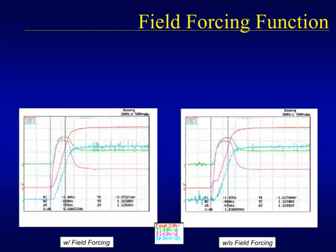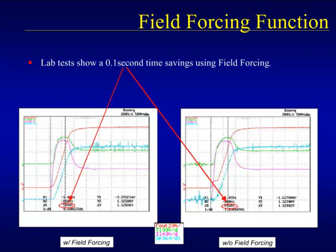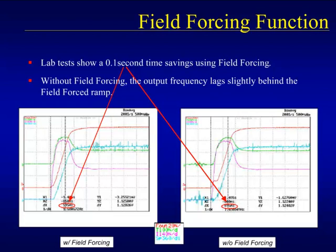These scope trace captures are from a test stand that was accelerated with and without field forcing. The motor in question was a 15 horsepower motor, and field forcing showed a 100 millisecond improvement in acceleration. The non-field force trace lags behind the field force one due to the time it takes to build up the flux in the motor, which in turn affects the ramp. Remember, the larger the motor, the greater the benefit of field forcing.